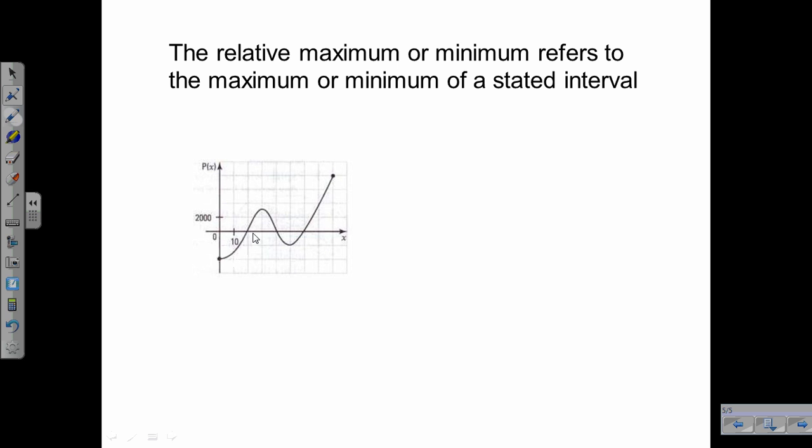If we look at this function here, we know it goes up and then down and then up again. What we'll notice is our absolute maximum occurs up here at 8,000, like we stated before. However, we've got another little maximum here, and this is what we refer to as a relative maximum.